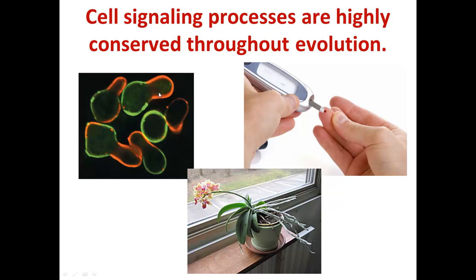Here on the left you see budding yeast forming projections called schmoo projections, named after a cartoon character. These budding yeast are actually mating — haploid budding yeast are signaling to one another so that they can mate and form diploid budding yeast.